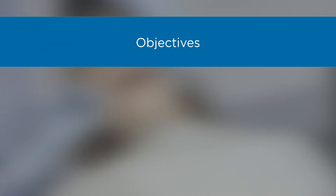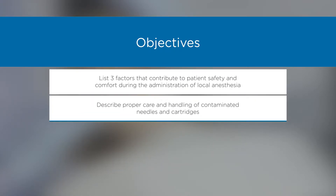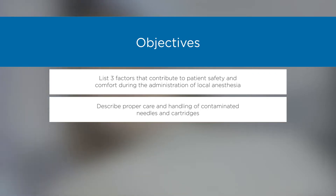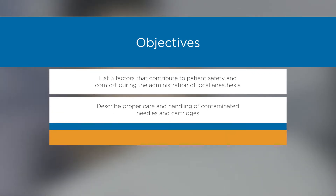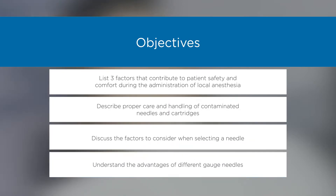Objectives: List three factors that contribute to patient safety and comfort during the administration of local anesthesia. Describe proper care and handling of contaminated needles and cartridges. Discuss the factors to consider when selecting a needle. Understand the advantages of different gauge needles.